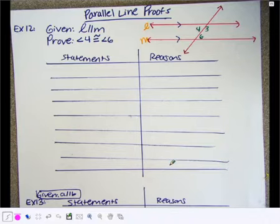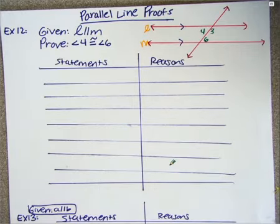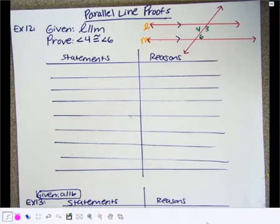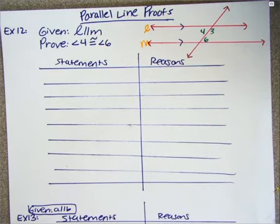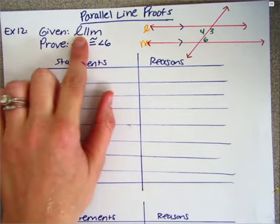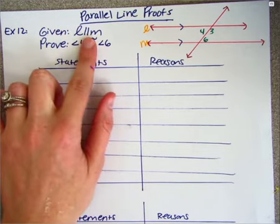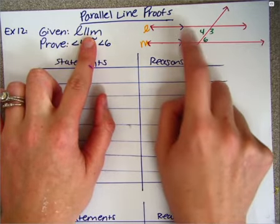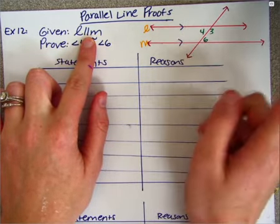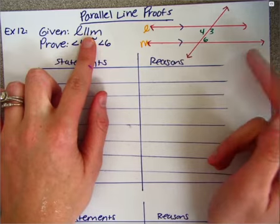We are now going to be starting some parallel line proofs, which is super exciting because I love parallel lines and I love proofs. In this one, we are given that line L is parallel to line M, and I marked my picture with these two arrows, which tells me that the lines are parallel.